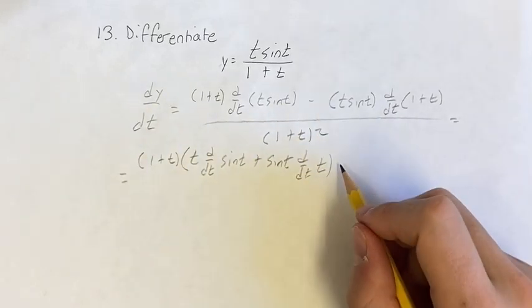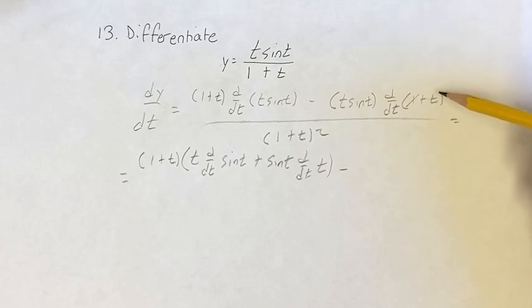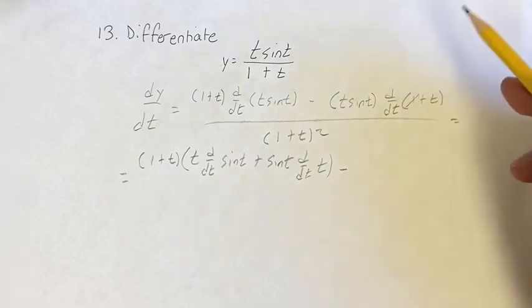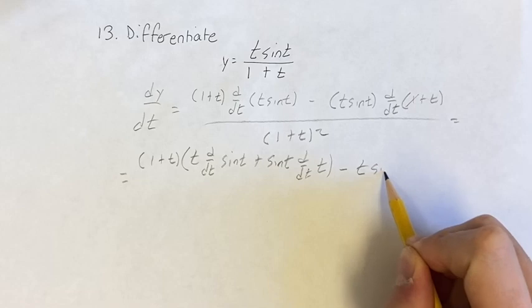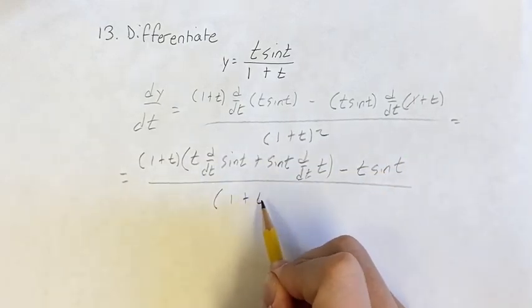And this is going to be minus t sine t. The derivative of 1 is 0, the derivative of t is 1, so this is 0 plus 1 which is just 1. So it's t sine t times 1, which is just t sine t. This is over 1 plus t squared.